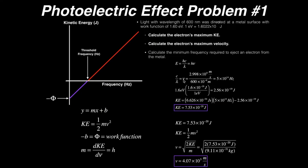So let's calculate the frequency first. The speed of light is 2.998 times 10 to the 8th meters per second. The wavelength is 600 nanometers, so to get it in meters I use 600 times 10 to the minus 9th meters. When I divide this out, I find the frequency is 5 times 10 to the 14th per second, or units of hertz.